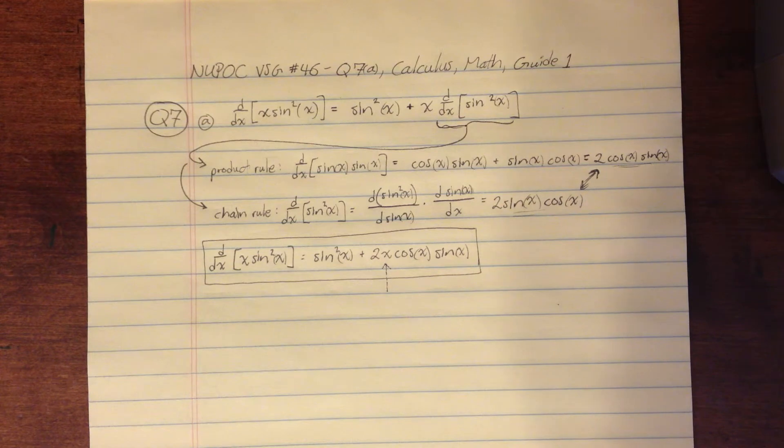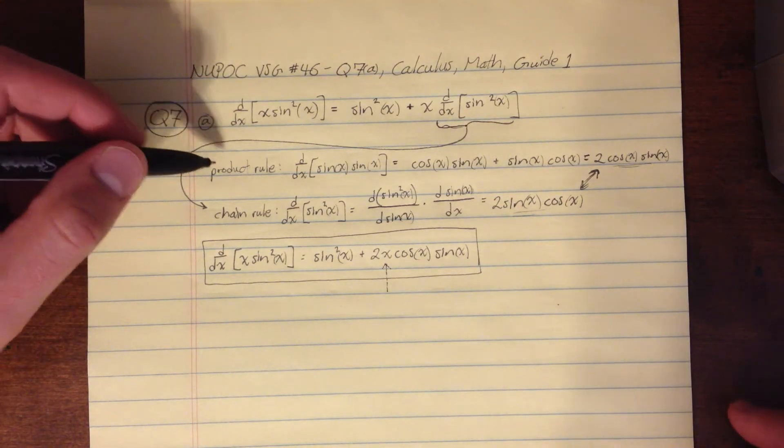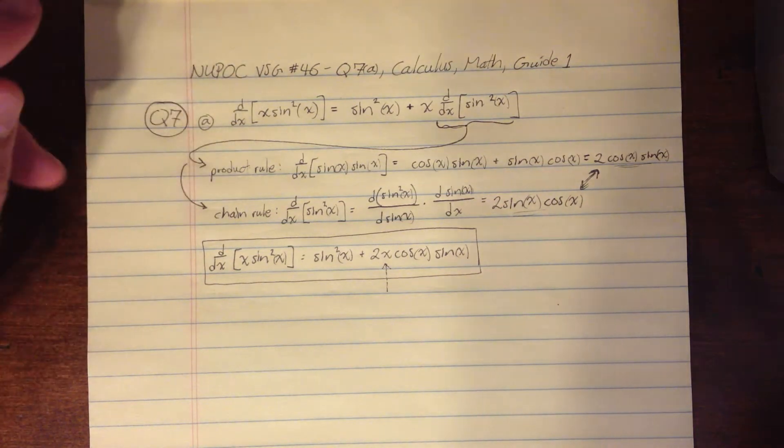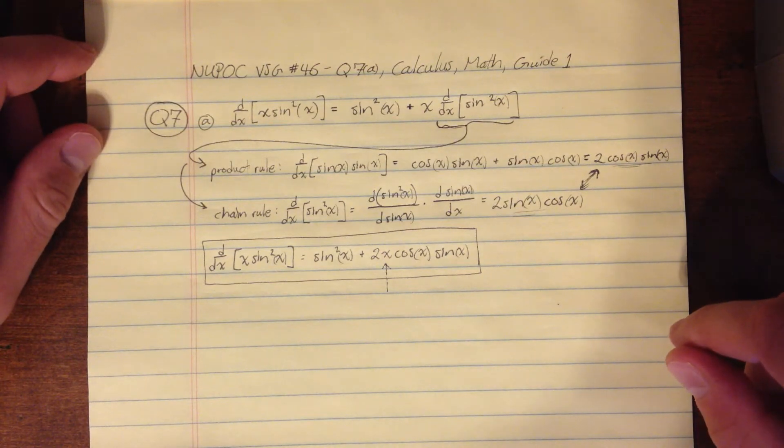But other than that, pretty simple. I think that's pretty neat how we can use either the product rule or the chain rule in that second part and get to the same solution. So I think that's about it.